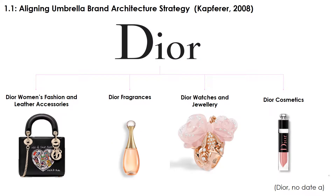Dior applies the Aligned Umbrella brand architecture strategy, since it distributes various products under the brand's name to different markets, while every category in Dior's portfolio shares the same philosophy and all the products are ultimately endorsed by Dior's rich history and culture.